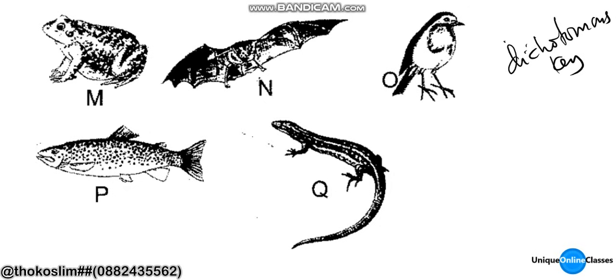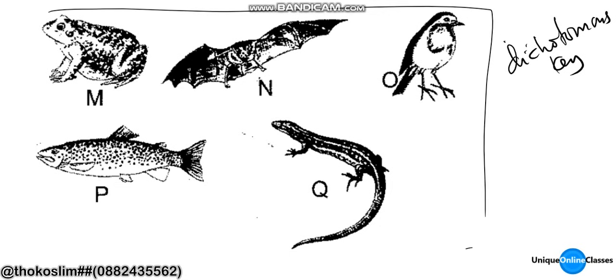We are looking at organisms and constructing their dichotomous key. Let's start. We are going to construct a dichotomous key; we are going to look at structures.